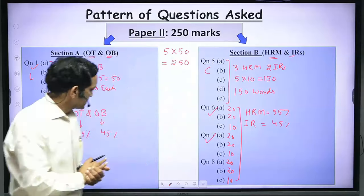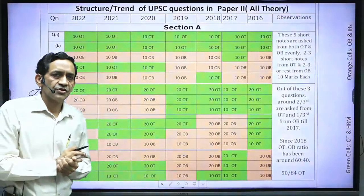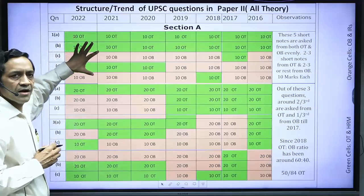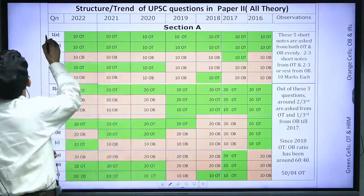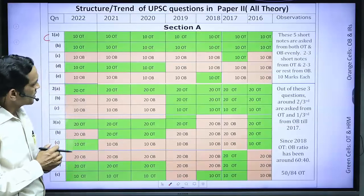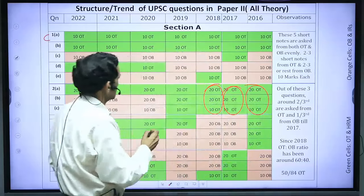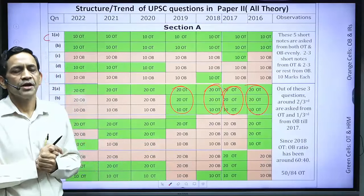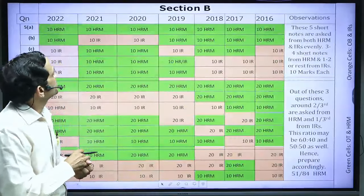Looking at Paper 2 in more detail: the green-marked area reflects Organizational Behavior. As discussed, two to three short notes are asked from OT and around two from OB in the compulsory question. For questions 2, 3, and 4, you must attempt at least one, and these are a mix of OT and OB. Rarely you will find all questions from one area — for example, in 2018 all three questions were from OT — but generally thereafter you will see a mix from both OT and OB.